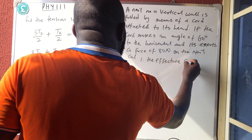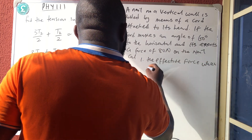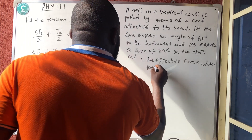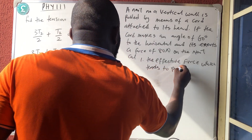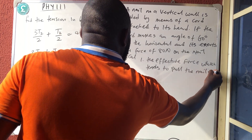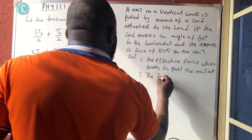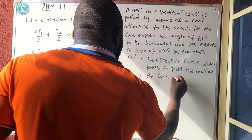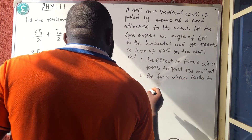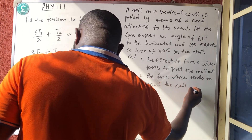We need to calculate: (i) the effective force which tends to pull the nail out, and (ii) the force which tends to bend the nail.